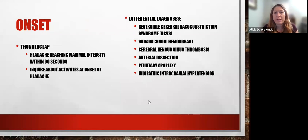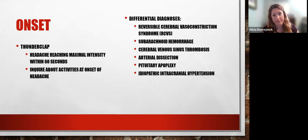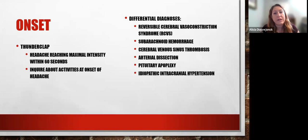The first O in SNOOP-4 is for onset. We're talking about thunderclap headaches — headaches that come on very suddenly and escalate from 0 to 10 within 60 seconds. Inquire about activities at onset: were they straining, involved in physical exertion, or sexual activity? The differential diagnosis includes reversible cerebral vasoconstriction syndrome (RCVS), subarachnoid hemorrhage, venous sinus thrombosis, arterial dissection, pituitary apoplexy or ischemia, or idiopathic intracranial hypertension.